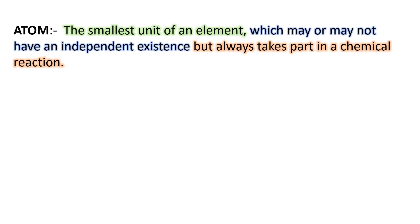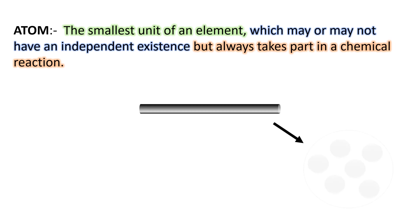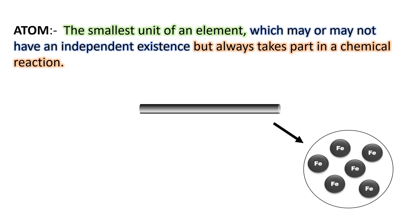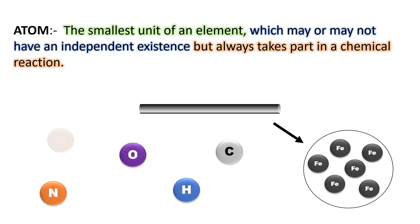Atom. What is an atom? Atom is the smallest unit of an element which may or may not have an independent existence but always takes part in a chemical reaction. For example, iron is made up of atoms of iron, gold is made up of atoms of gold, hydrogen is made up of atoms of hydrogen, nitrogen gas is made up of atoms of nitrogen. Similarly, carbon is made up of carbon atoms, oxygen is made up of oxygen atoms, and chlorine is made up of chlorine atoms. So every element is made up of atoms of that element.